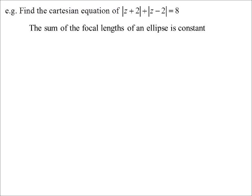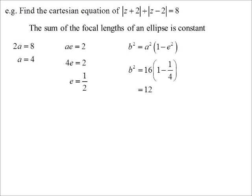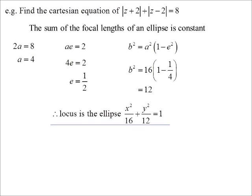The constant equals 2a, so 2a = 8, giving a = 4. Since one focus is at 2 and the other at −2, the centre is at the origin, so ae = 2, and the eccentricity e = 1/2. The only other thing needed is b². We have b² = a²(1 − e²) = 16(1 − 1/4) = 12. So the locus is x²/16 + y²/12 = 1. There are a couple of questions like that back in Patel you might like to try, probably in exercises 6E and 4N.